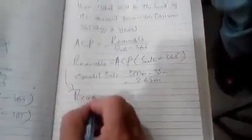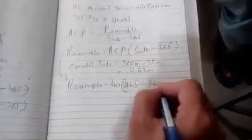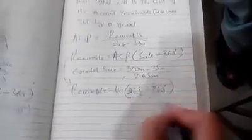Now we can put the data in this model. Receivable is equal to average collection period is 40 days into sale - credit sale is 265 divided by 365. Receivable is 40...